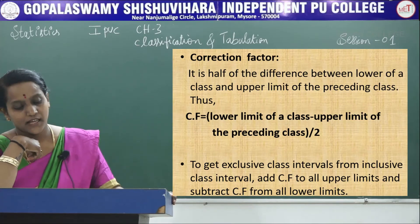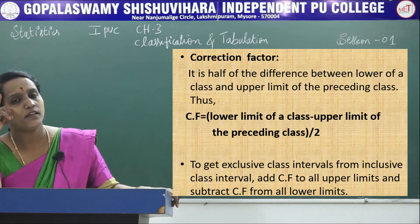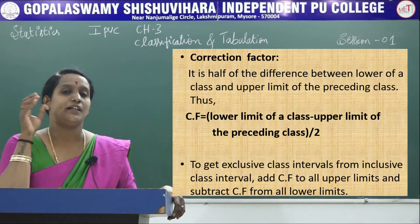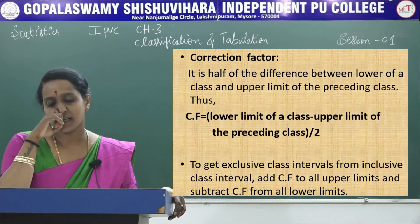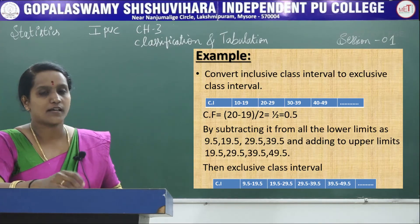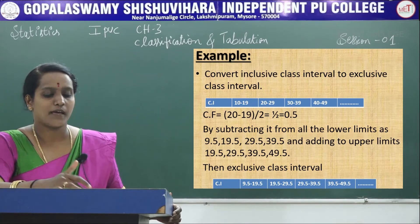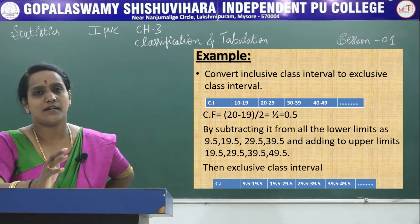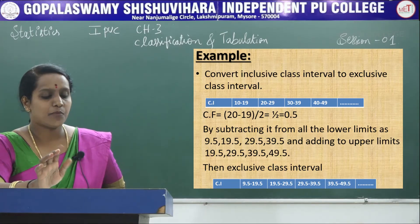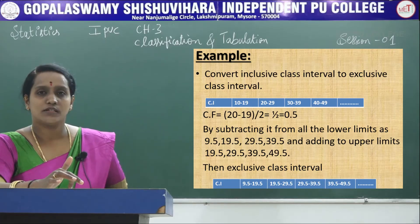Next is the correction factor. It is half of the difference between the lower limit of a class and the upper limit of the preceding class. For example, for class intervals 10 to 19, 20 to 29, 30 to 39, 40 to 49, we need to make them continuous. We take the upper limit minus lower limit and divide by 2, giving 0.5. To make the intervals continuous, we add 0.5 to the upper limit and subtract 0.5 from the lower limit.